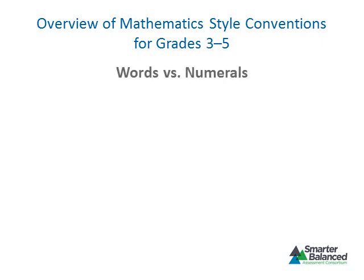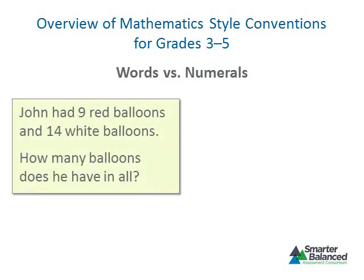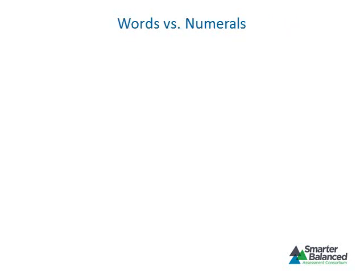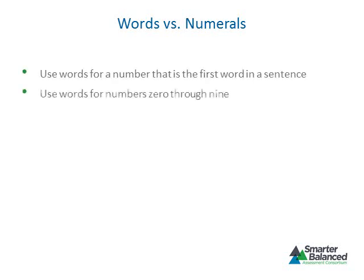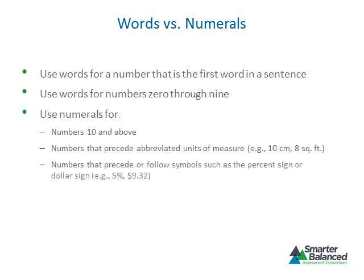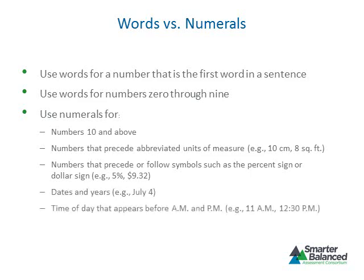Let's look at the treatment of numbers. Numerals should always be used to represent numbers referenced in a word problem, appearing in equations, or in a pattern. The Smarter Balanced Style Guide also directs item writers to use words for numbers that appear as the first word in a sentence. Words should be used for the numbers 0 through 9, with exceptions: use numerals for numbers 10 and above, numbers that precede units of measure, numbers preceding or following symbols such as the percent sign or dollar sign, dates and years, time of day before a.m. and p.m., and ordered pairs and coordinates.